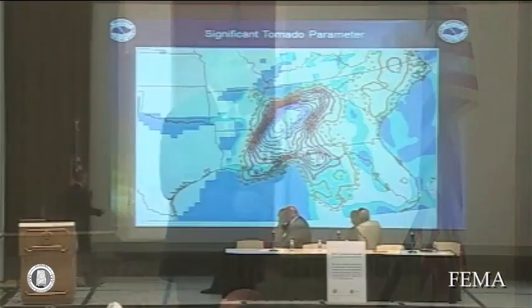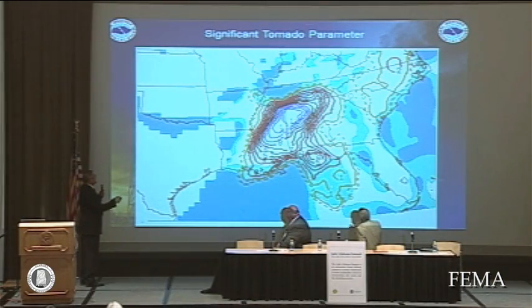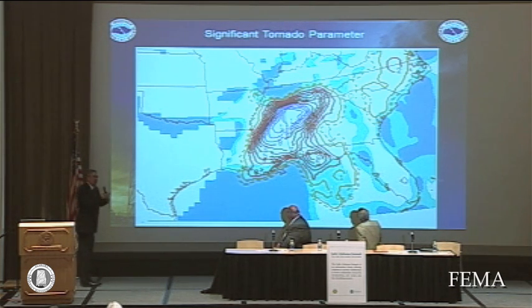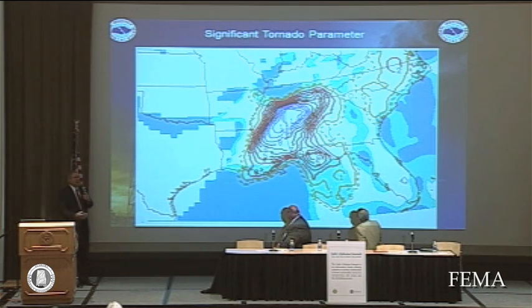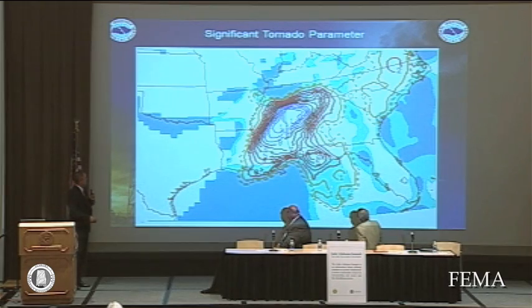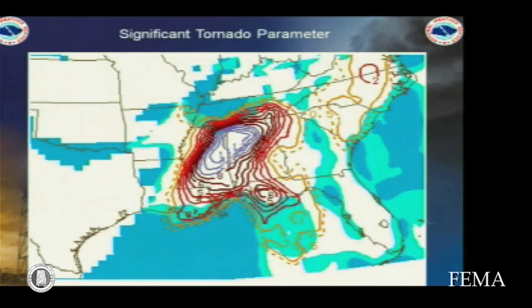I can show you all kinds of parameters that we looked at during this day, but in a nutshell, this one says it all. This is the significant tornado parameter, and it pulls together all the data for what we expect for significant tornadoes — that is, EF2 or greater. Anything greater than 1 means you have a pretty high chance of a significant tornado occurring. And here are values of 10, 11, and 12. So we just had an incredible setup.